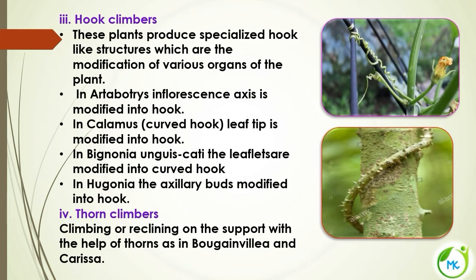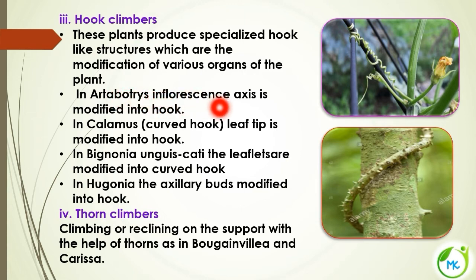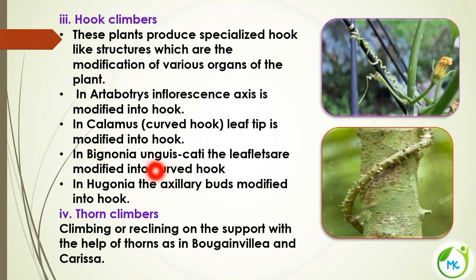The third climber is hook climber. These plants climb with the help of specialized hook-like structures. The hooks are modified organs of the plant. In Artabotrys, the inflorescence axis is modified into a hook. In Calamus, the leaf tip is modified into a hook. In Bignonia, the leaflets are modified into hooks. In Hugonia, the buds are modified into hooks — so various organs can get modified into hooks.